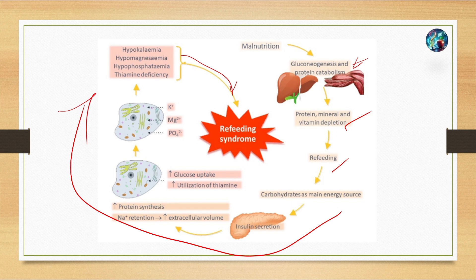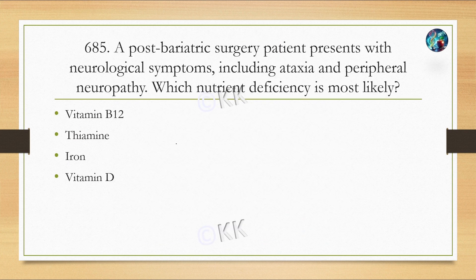Next question: a post-bariatric surgery patient presents with neurological symptoms including ataxia and peripheral neuropathy. Which nutrient deficiency is most likely? Option A: vitamin B12. Option B: thiamine. Option C: iron. Option D: vitamin D.